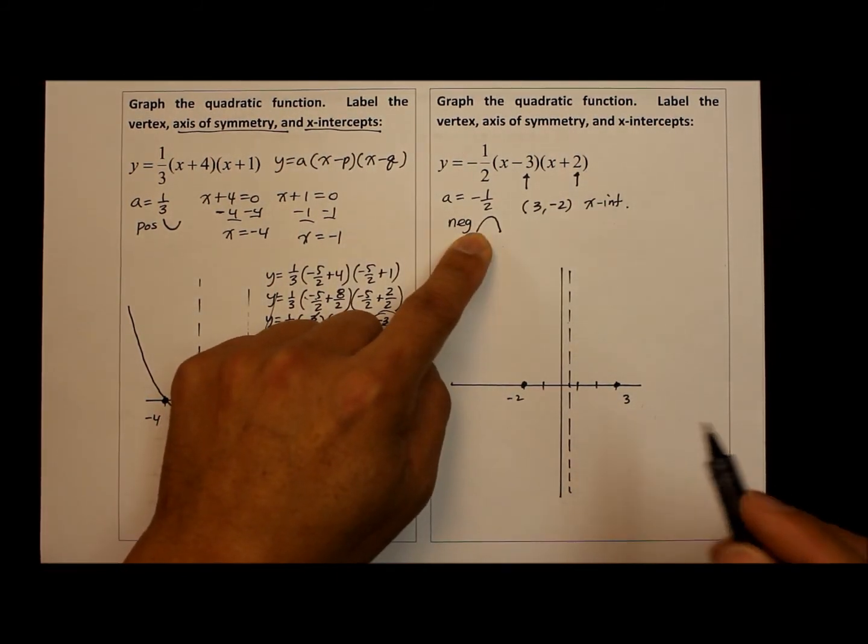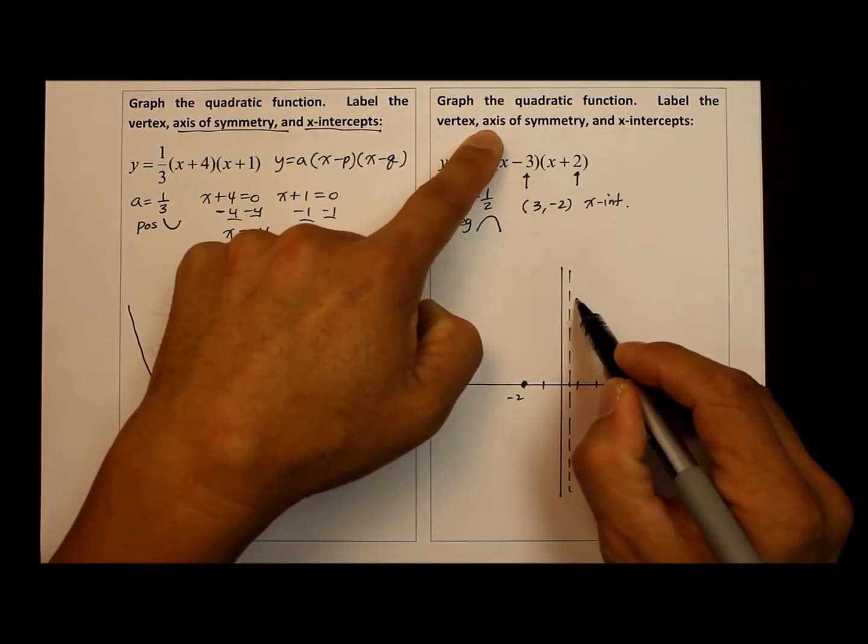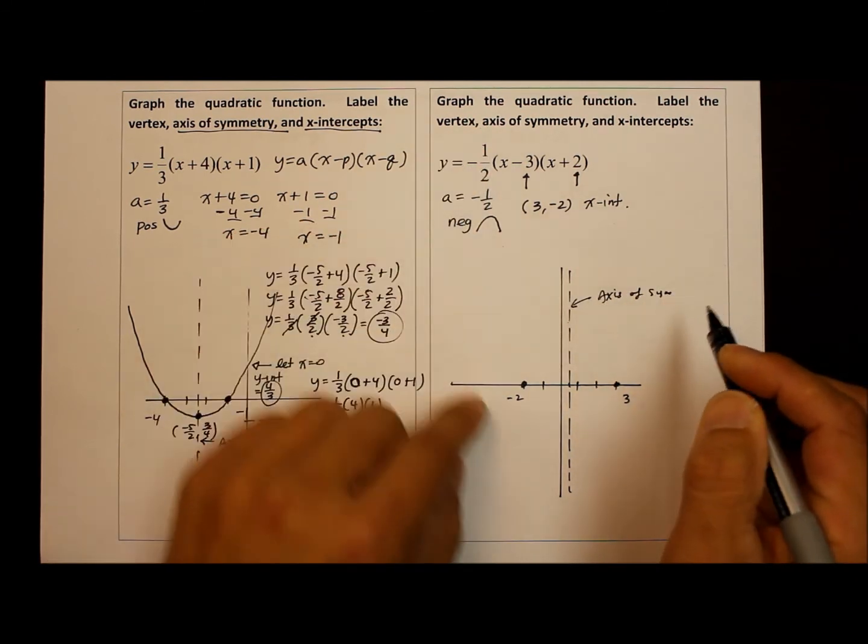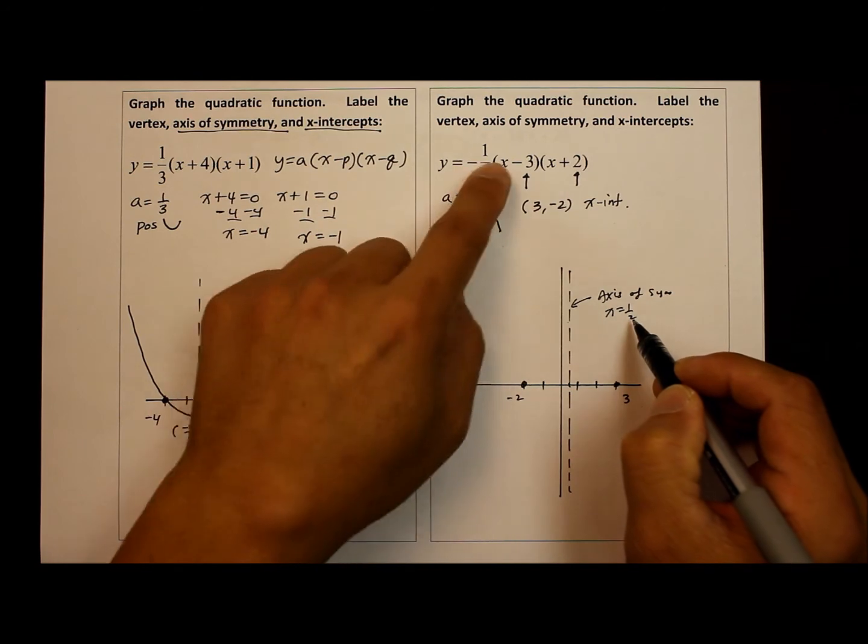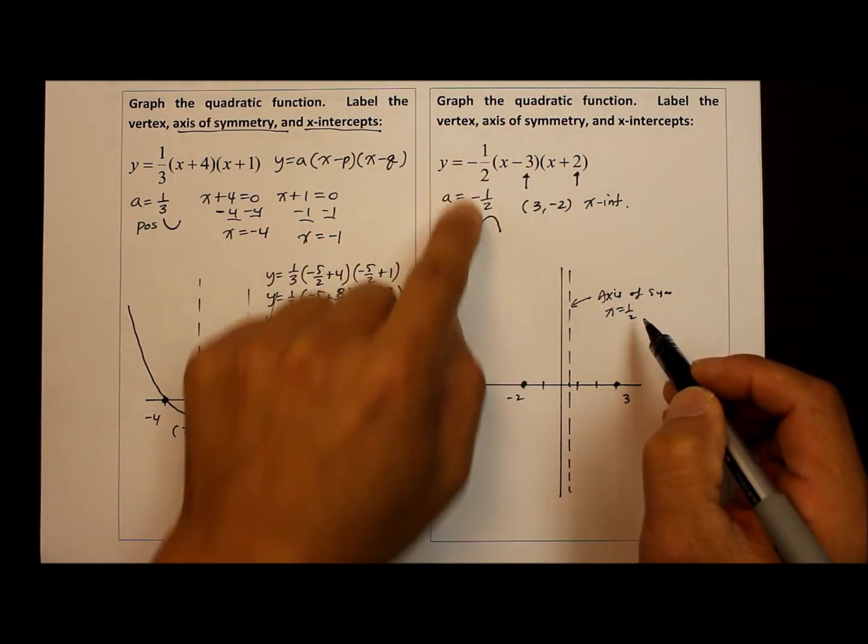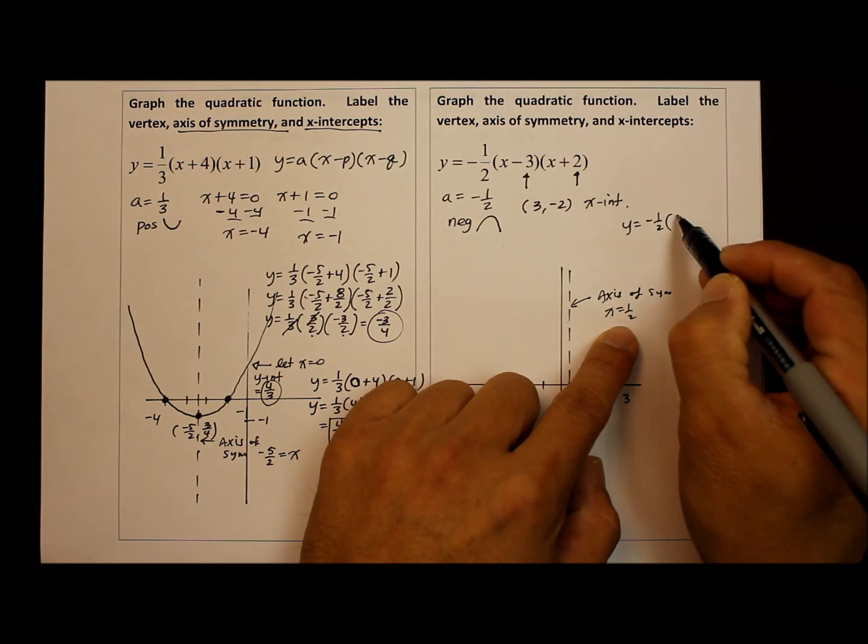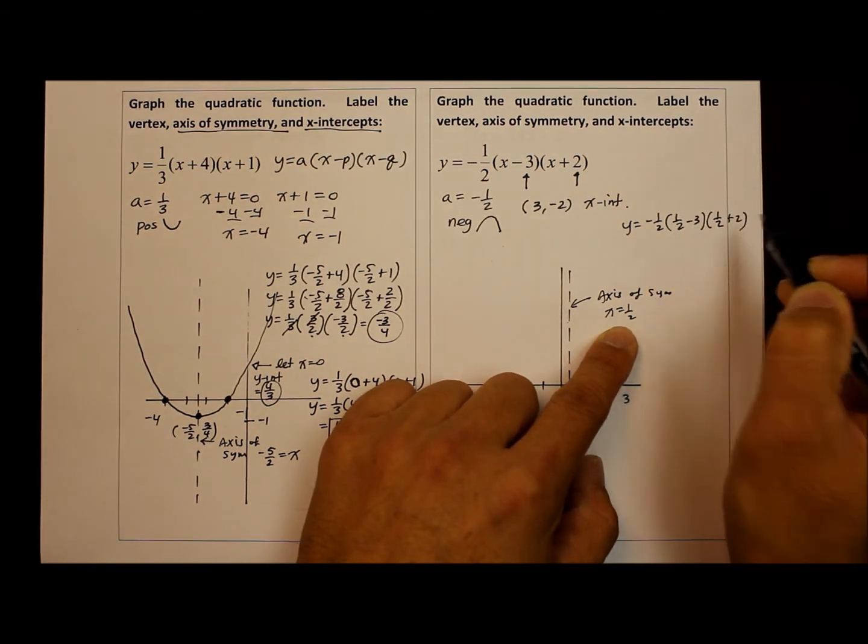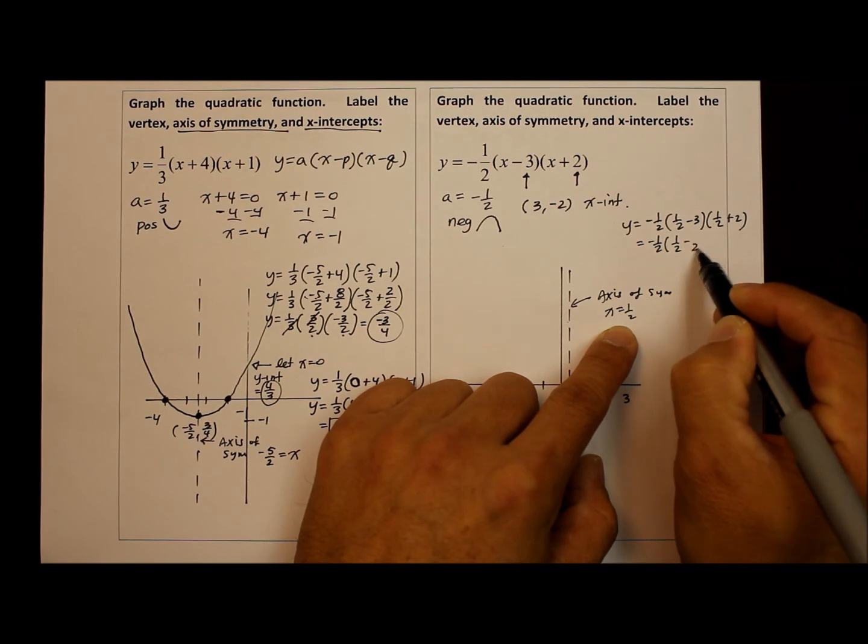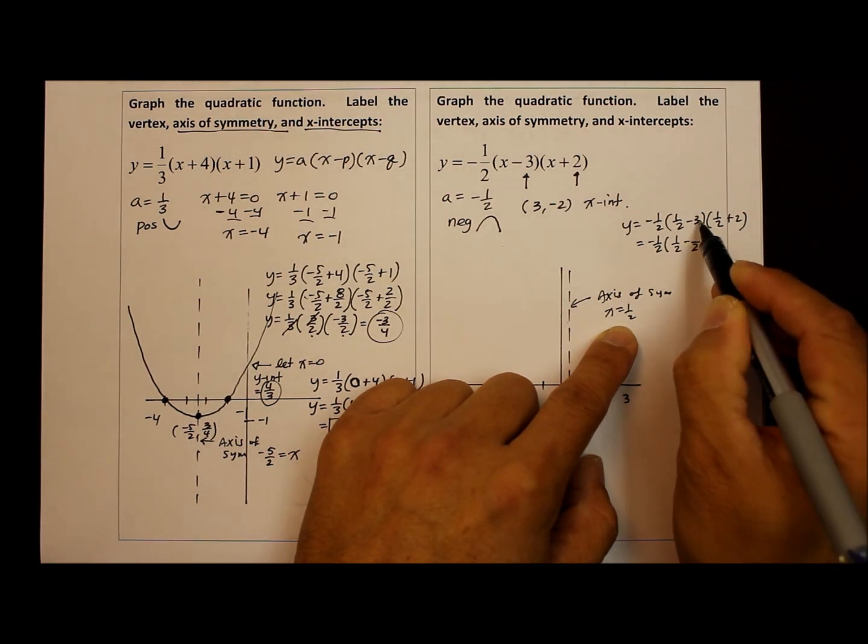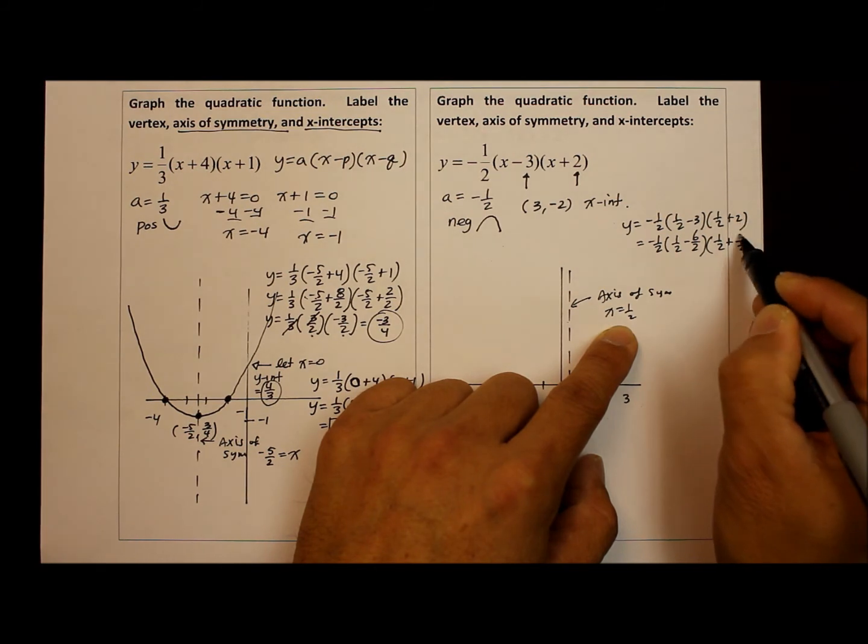And since it's going to open downward, we need to find the maximum point. So once again, the x of symmetry is one-half. So let's substitute one-half into those x's to find the vertex y value. So here we have y equals negative one-half times one-half minus three times one-half plus two. Then we have one-half outside. Common denominator here is two. So three must become six over two. And here two becomes four over two.